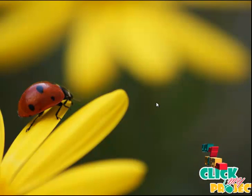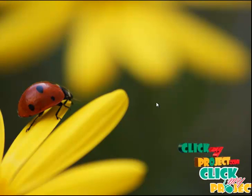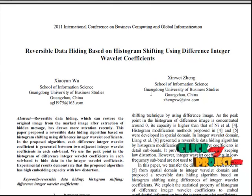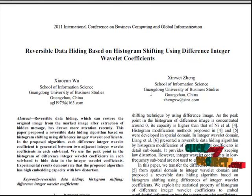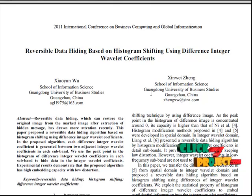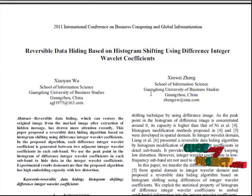Welcome to ClickMyProject.com. This project discusses reversible data hiding based on histogram shifting using different integer wavelet coefficients. We transfer the difference idea from the spatial domain to the integer wavelet domain and propose a reversible data hiding algorithm based on histogram shifting using differences of integer wavelet coefficients. We exploit the statistical properties of the histogram of different integer wavelet coefficients to embed confidential information into the integer wavelet coefficients.